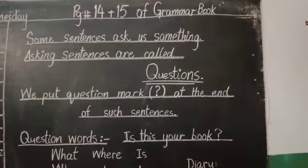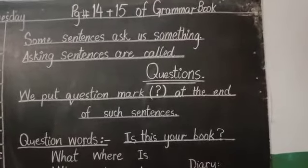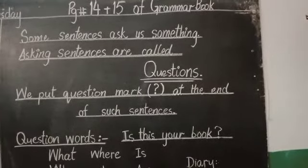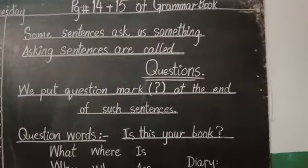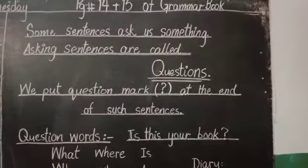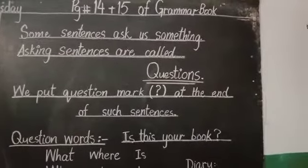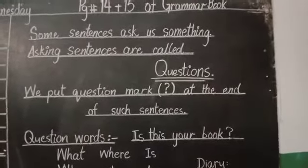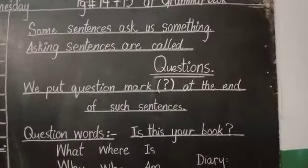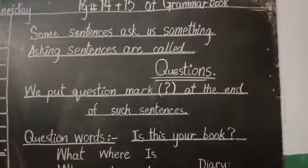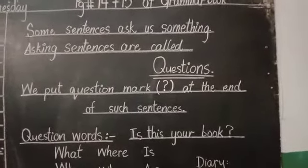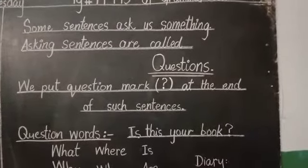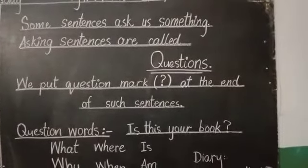You can see a statement at the top of this page. Some sentences ask us something, and asking sentences are called questions. Yianni kuch jumle aise hote hain jo humse sawaal puch rahe hote hain. Ask means puchna. So asking sentences jitne bhi hote hain, jis me humse kuch puchha ja raha hota hai, woh sawaal hote hain — questions hote hain. We put a question mark at the end of such sentences.